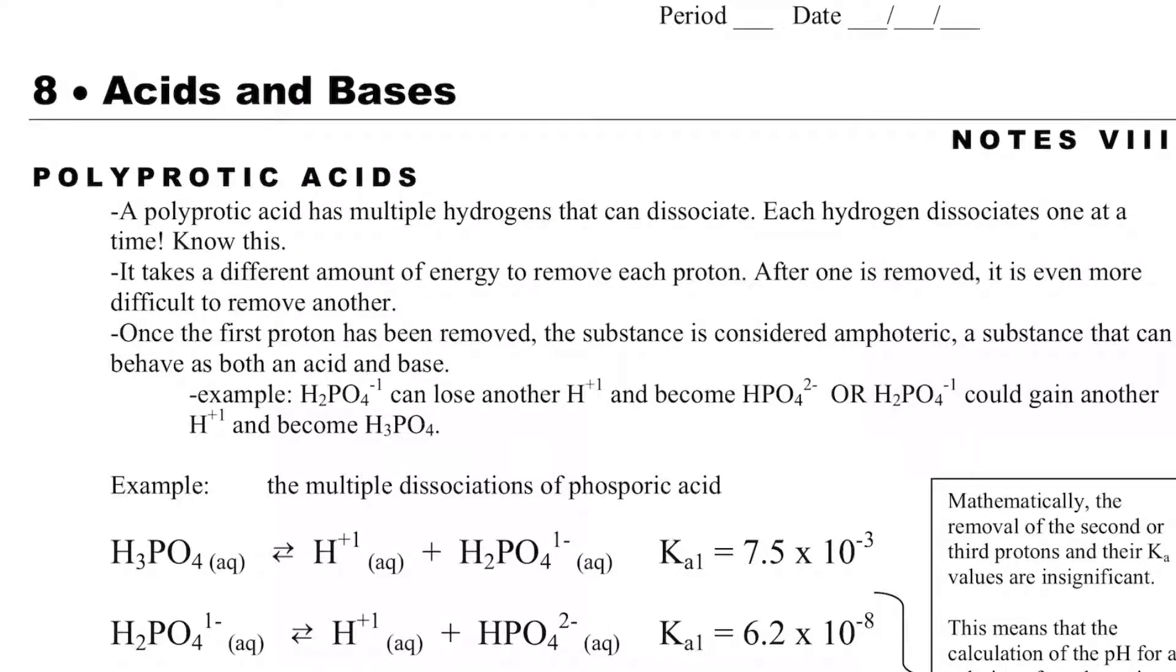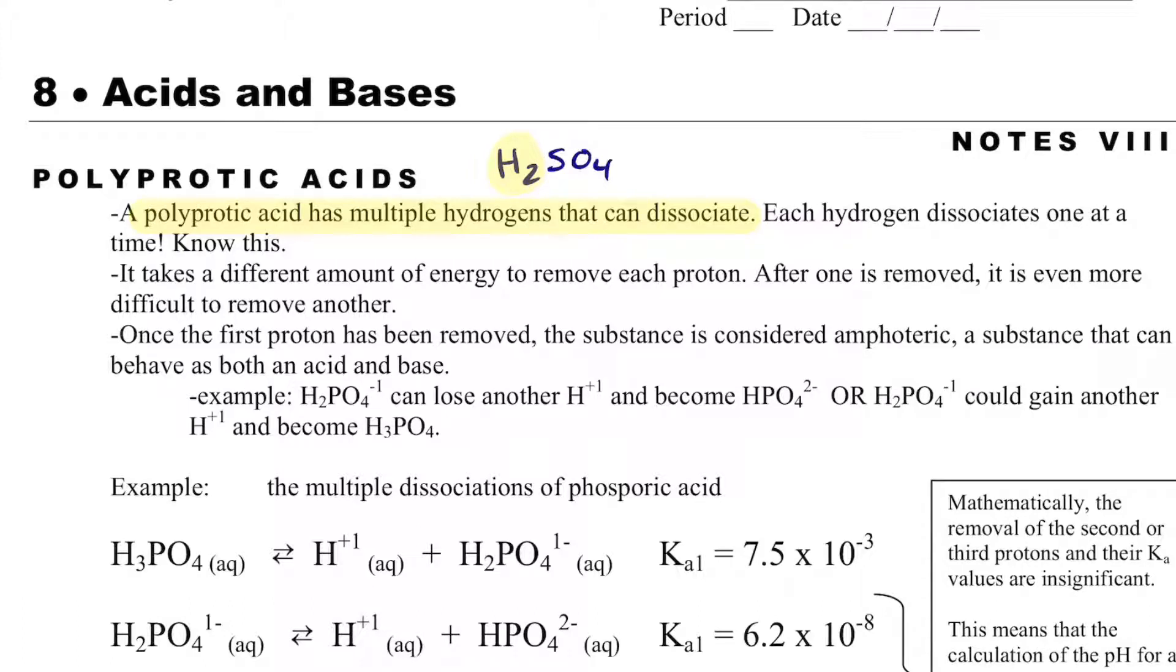In this video, we will discuss polyprotic acids and how to solve problems that have polyprotic acids in them. A polyprotic acid is one that has multiple hydrogens that can dissociate. A clue for that is, for example, H2SO4. I see two H's out in front, and so I could have two H's that dissociate.